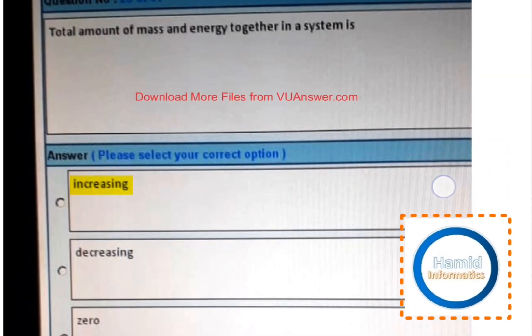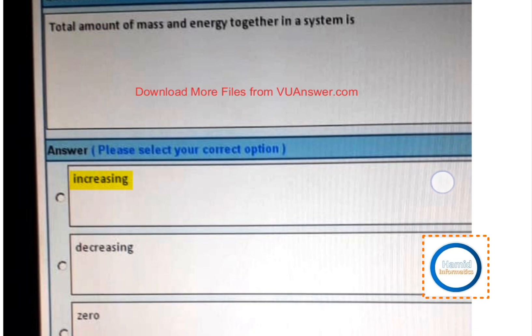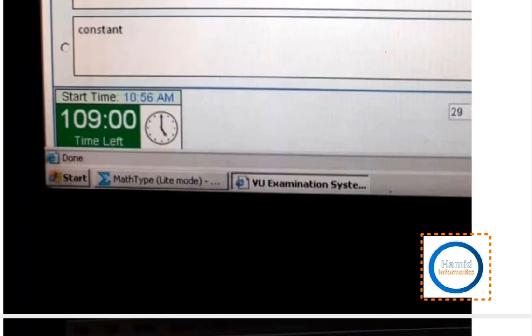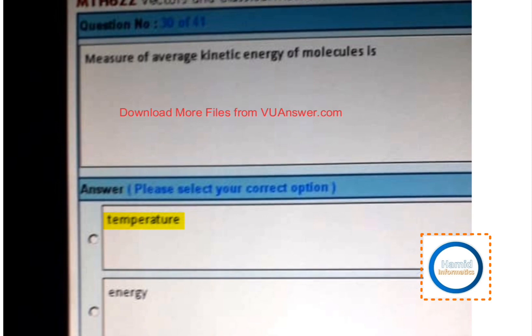Total amount of mass and energy together in a system is increasing. Measure of average kinetic energy of molecules is temperature.